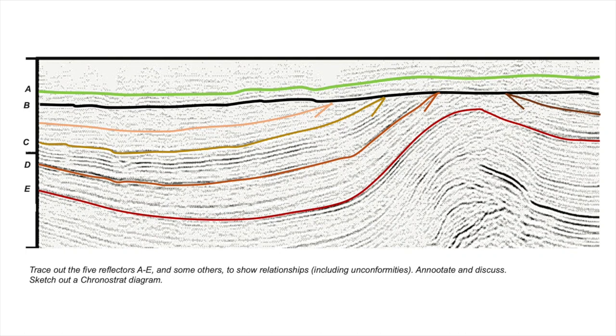So that's interpretation one, a sub-planar unconformity that's planed off the top of a fold structure. And then above this unconformity, the strata have been laid down on top sub-horizontally.